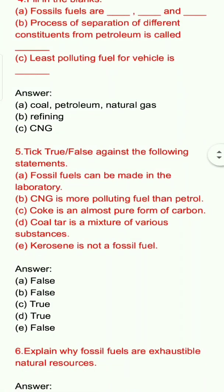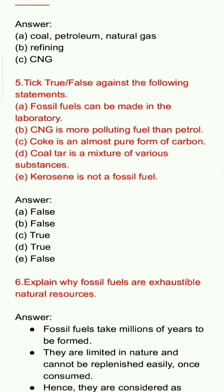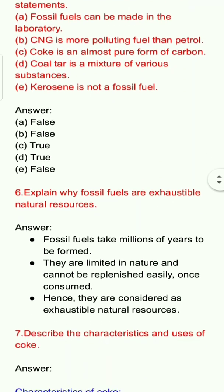Question 5: Tick true or false against the following statements. A) Fossil fuels can be made in the laboratory — False. B) CNG is more polluting fuel than petrol — False. C) Coke is an almost pure form of carbon — True. D) Coal is a mixture of various substances — True. E) Kerosene is not a fossil fuel — False.